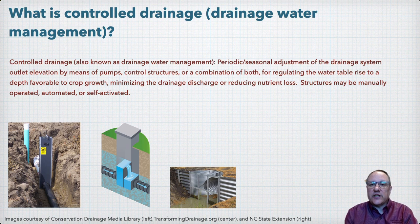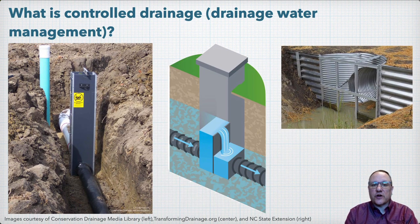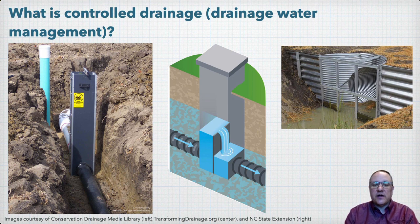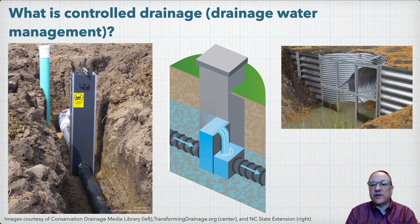The illustrations shown here are typical of water control structures for controlled drainage that use adjustable stop logs to raise and lower the outlet elevation. The picture and graphic on the left are typical control structures for subsurface drainage systems, and we'll focus on subsurface drainage systems. But controlled drainage can also be used for surface drainage, and the picture on the right is an example of a control structure in a surface drainage ditch. In systems that use lift stations, the pump operation can be used to manage the system for controlled drainage.